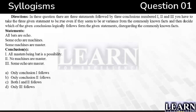In this question there are three statements followed by three conclusions. You have to take the three given statements to be true even if they seem to vary from commonly known facts, and then decide which of the given conclusions logically follows from the given statements, disregarding the commonly known facts. Whatever statement they have given, we have to consider those statements as true.